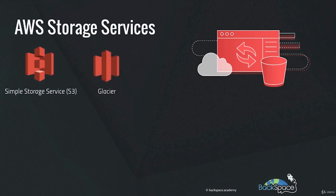Amazon Glacier is the cheapest storage option on AWS, used for long-term archiving of data. It's a serverless service like S3 but is not as readily accessible, so it should only be used for content to be archived. You can also set up a lifecycle rule that will automatically migrate old data from Amazon S3 over to Glacier for long-term archiving.